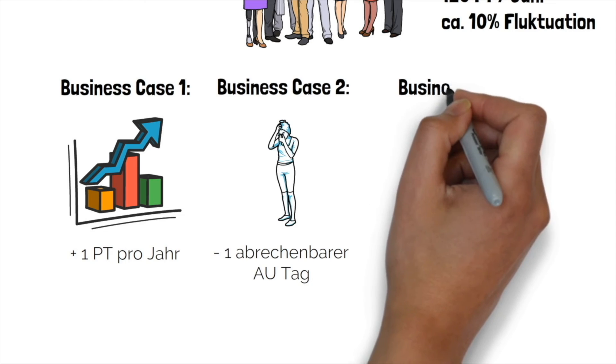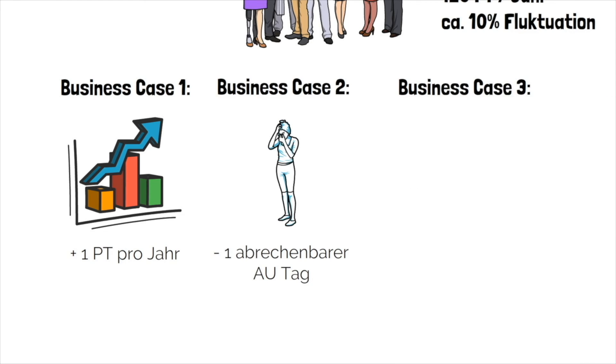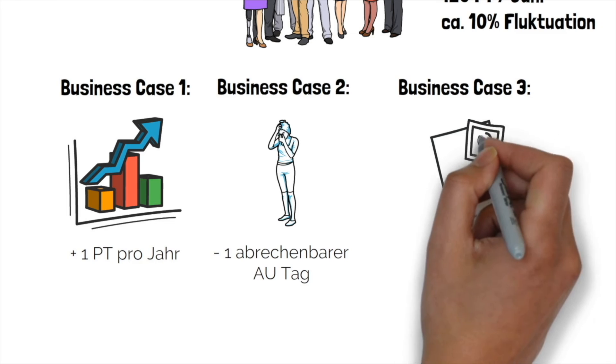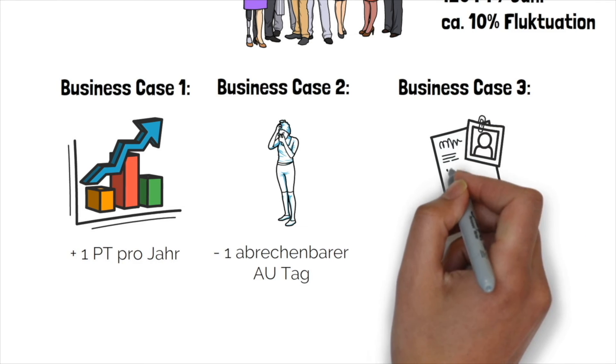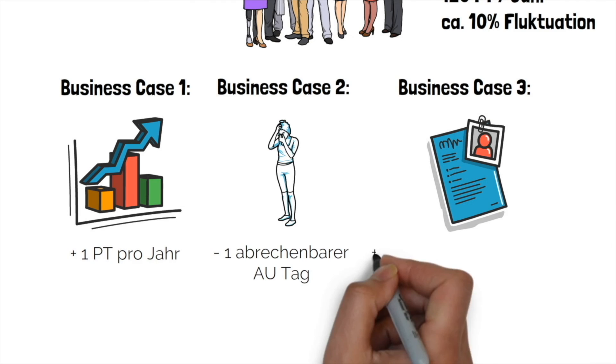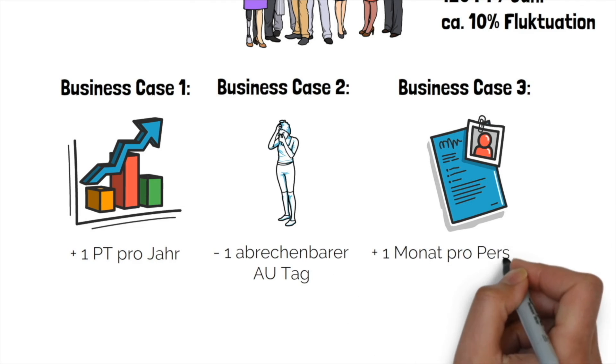In the third case, we look at employee retention. With 10% turnover, you lose on average 1.5 people from your 15-person team. If we manage to delay one resignation and employee departure by just one month, the program pays for itself and increases your contribution margin.